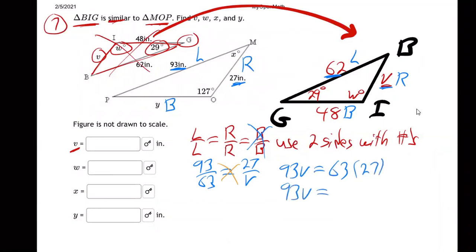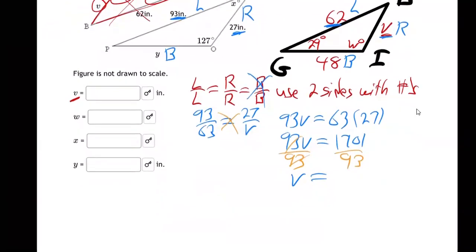And then you solve that by cross multiplying diagonal diagonal, and you get 93V is 63 times 27. 93V equals whatever my calculator says, 63 times 27 is 1701. Last step, divide by 93. V equals I'm getting a decimal, so it's 18.290322. They didn't say how many places, it's usually two places, so I'll just type in 18.29 for side V.